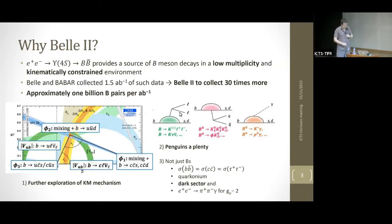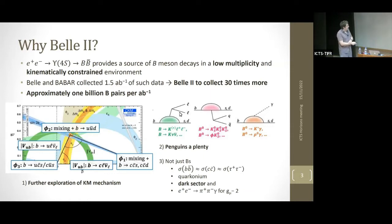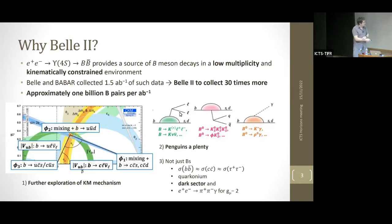At this center-of-mass energy, it's not just B physics — the cross section for charm and tau production is almost equal to that of B mesons, so we have very large charm samples and a world-leading number of tau decays. There's also great interest in spectroscopy from both B decays and ISR, where you reduce the center-of-mass energy to produce exotic states in the charmonium region, dark sector searches, and measurements of low-multiplicity e⁺e⁻ → ππγ final states that feed into g−2 calculations.